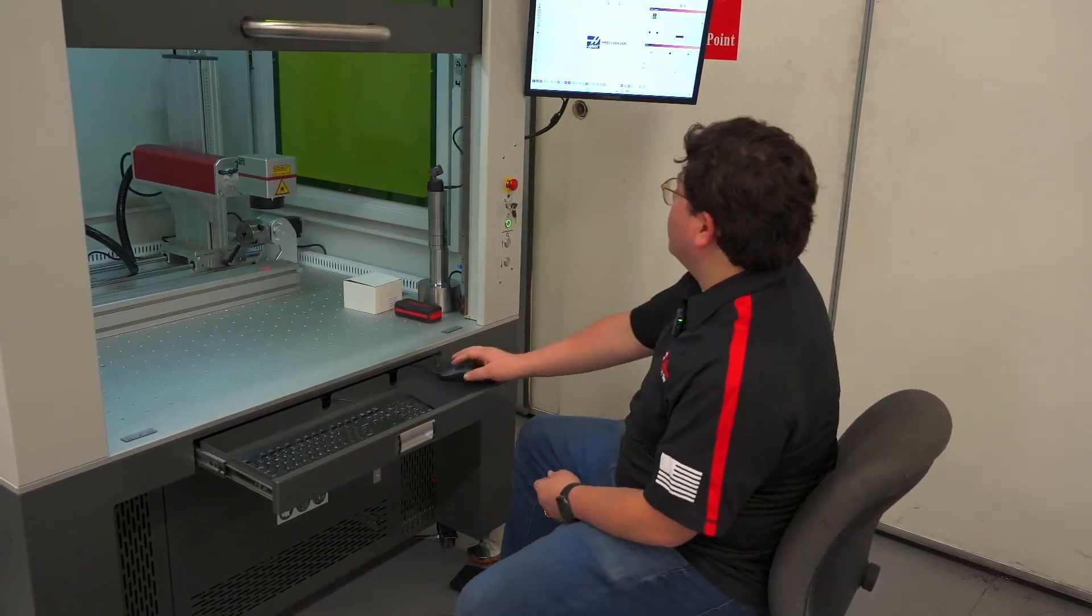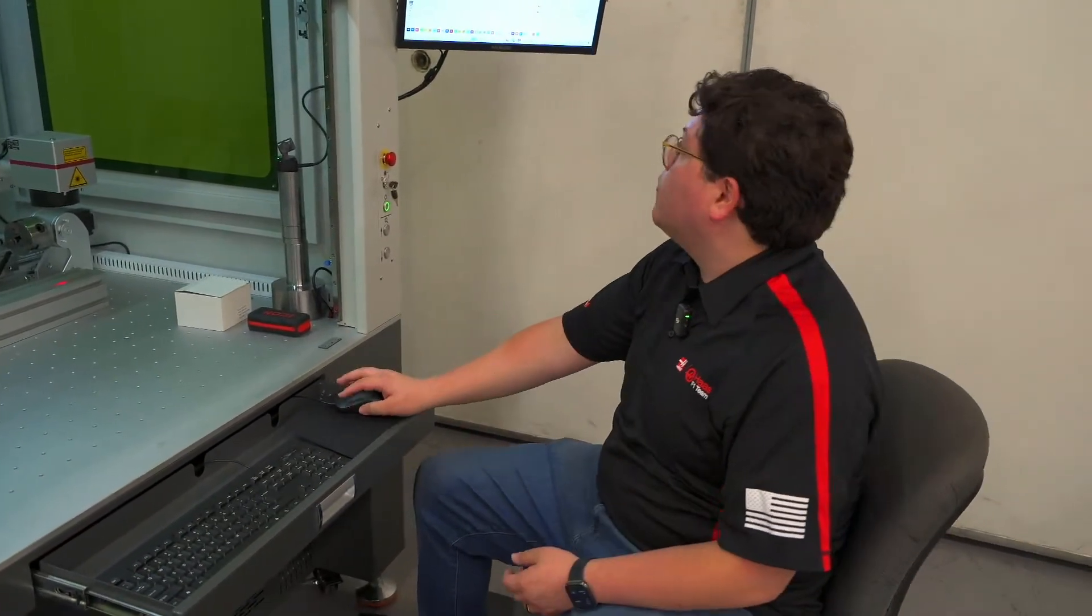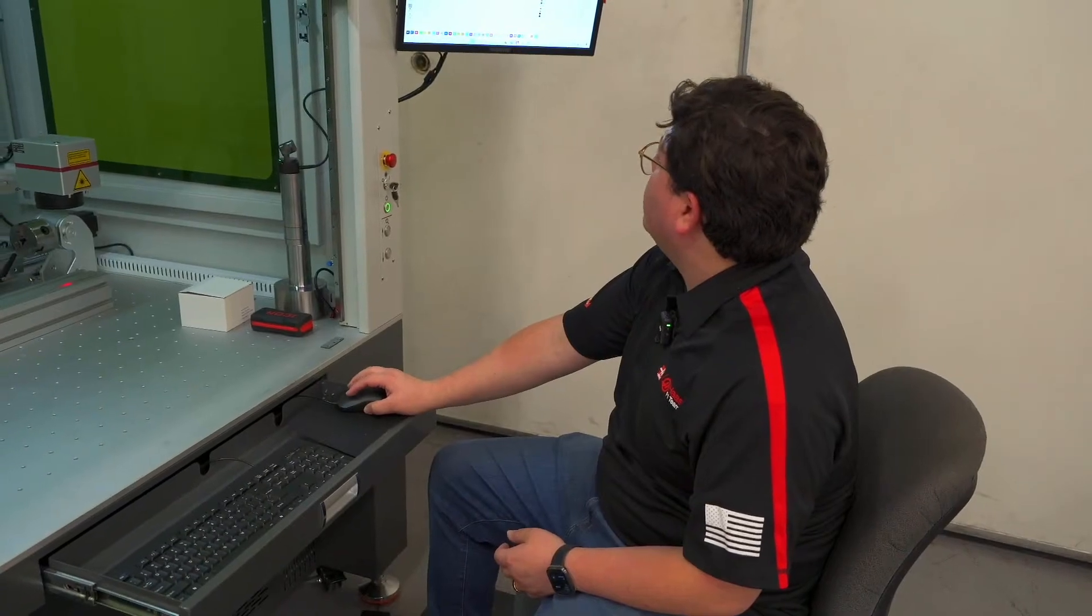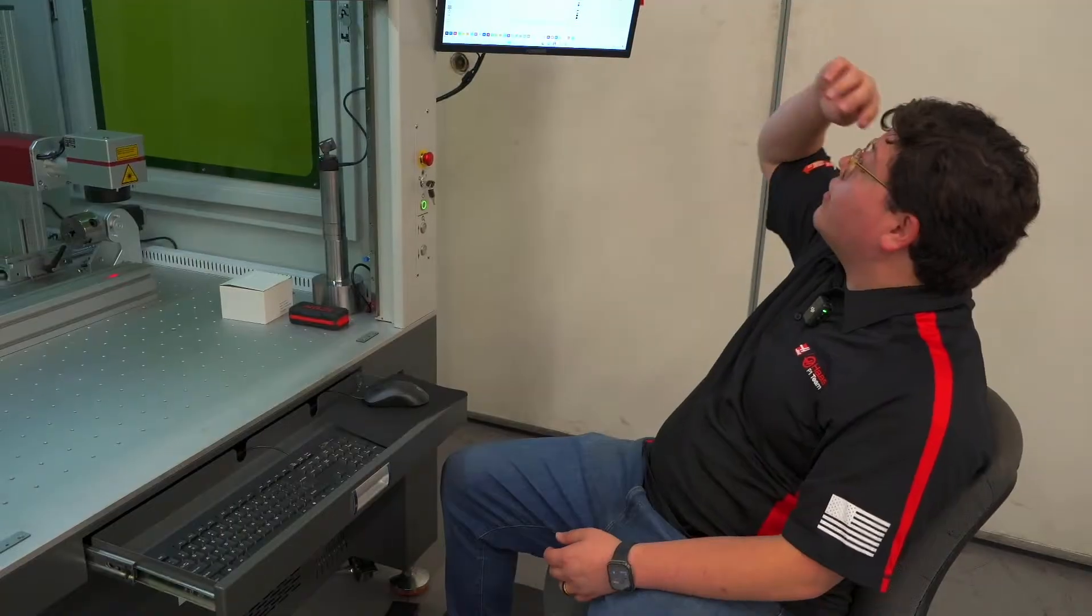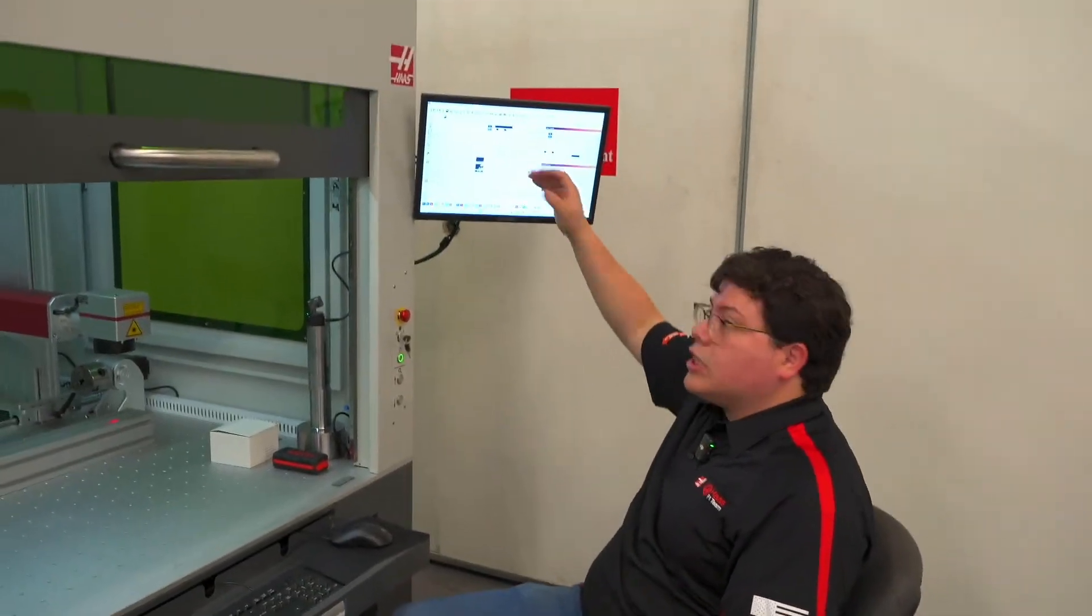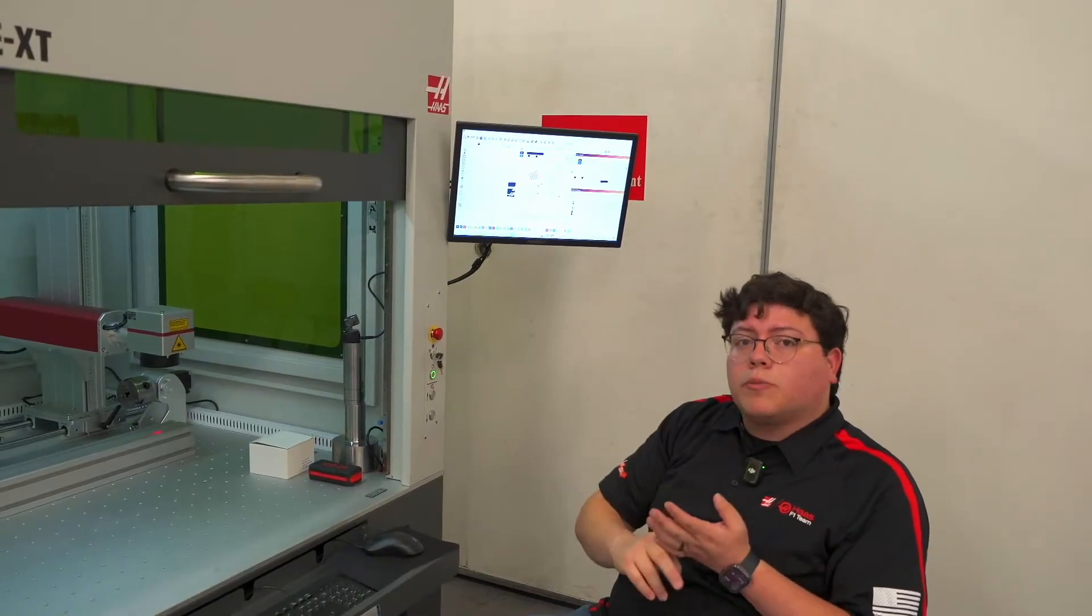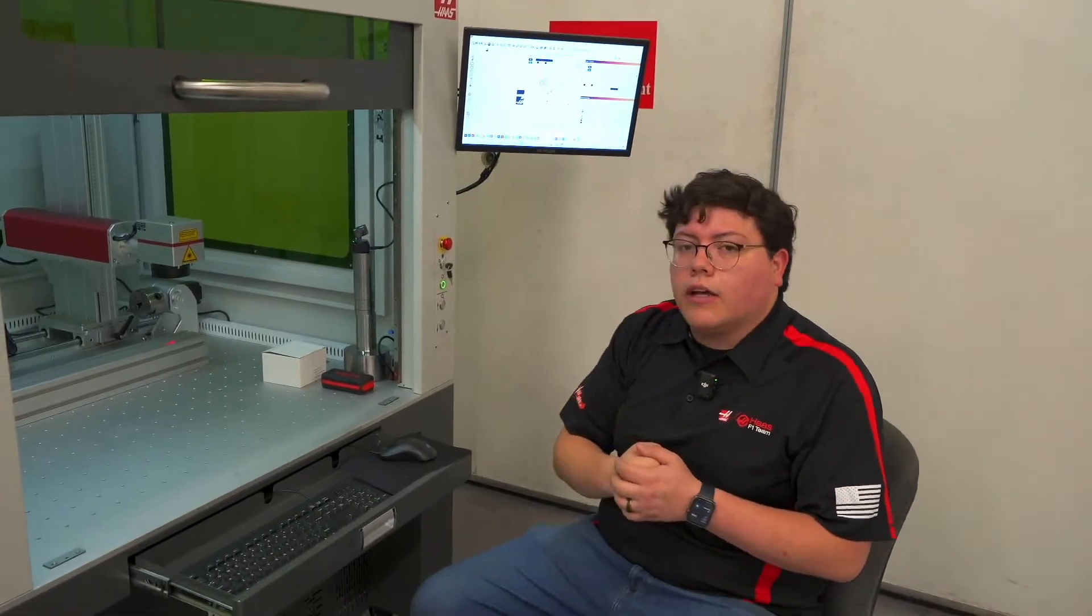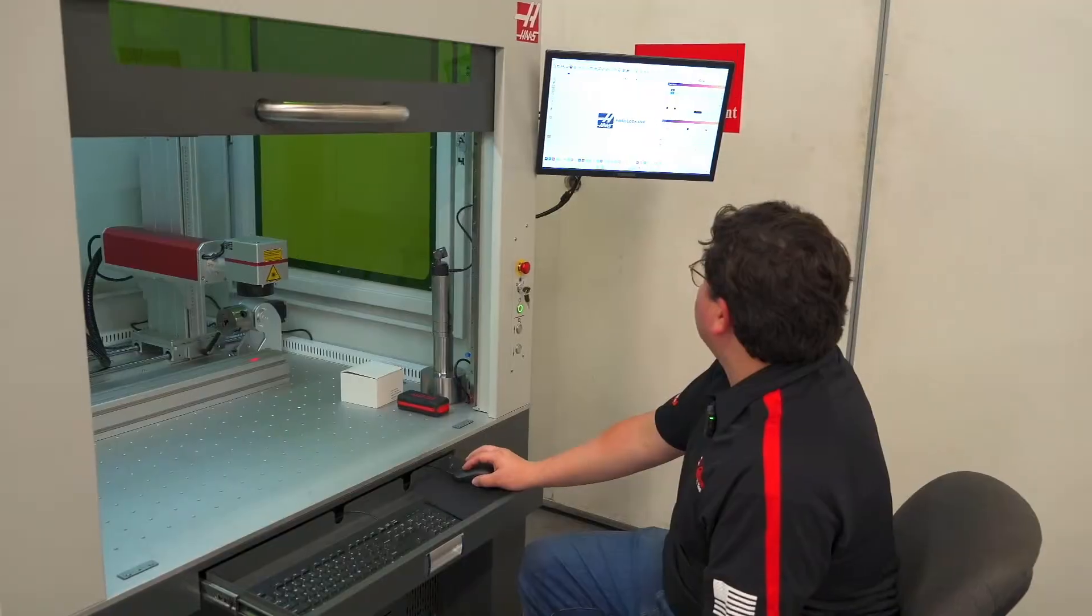So what's the next step if we want to actually engrave this? Next step, technically what you would do, and we already have it set up, is make sure that my cut settings are verified. So currently I'll open up the cut settings editor. I'll look to see my speed, I'll look at my power, I'll also look at my frequency and the lines per interval. Everything looks good.